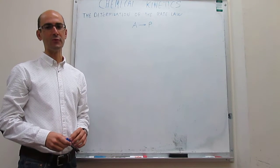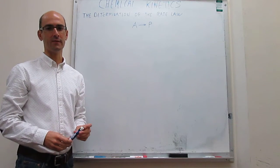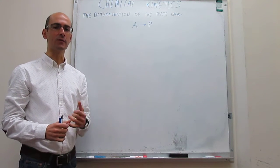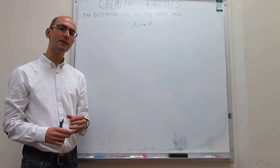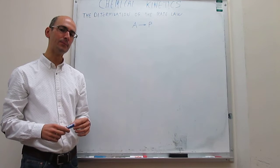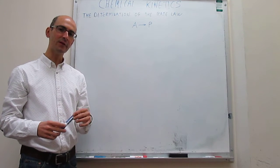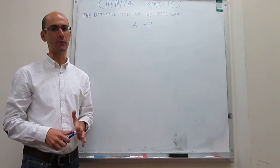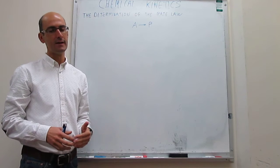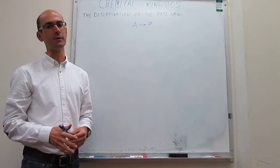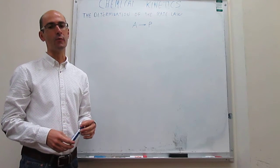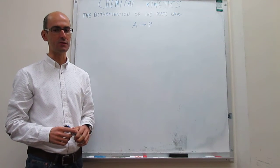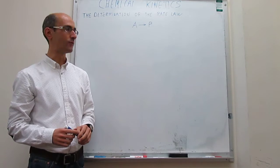In this video, we learn how to determine the rate law using two methods: the integration method and the half-life method. In prior videos, we have defined what the rate law of a chemical reaction is. The rate law is simply how the rate of the reaction depends on the concentration of reagents.